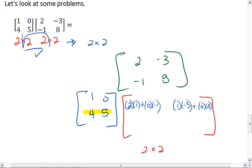To figure out the bottom row, we take the bottom row of your first matrix, and then the first column of the second matrix. We multiply the first elements together. We get 4 times 2, plus the second elements being multiplied together: 5 times negative 1.